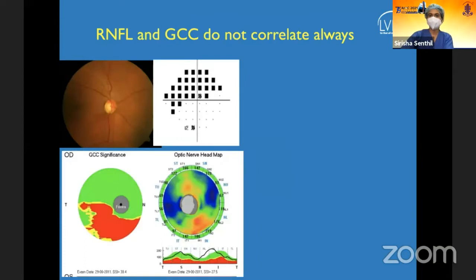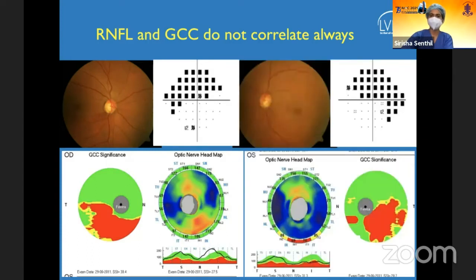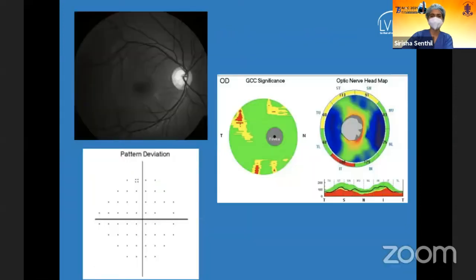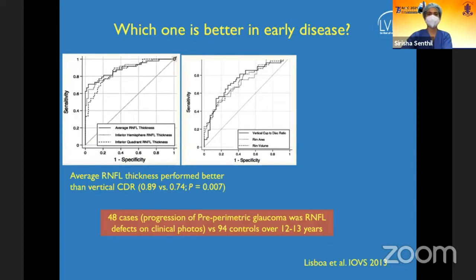RNFL and GCC do not always correlate. In one example, GCC picked up an inferior RNFL defect that RNFL measurement missed, while in the fellow eye the defect was detected by both RNFL and GCC. This is an important reminder that they sometimes do not match, and the question remains which is better in early disease.